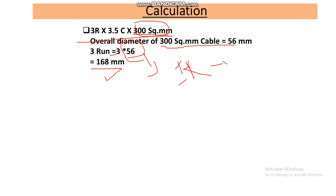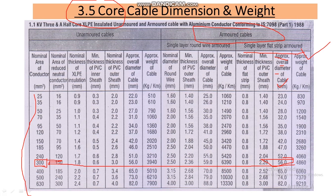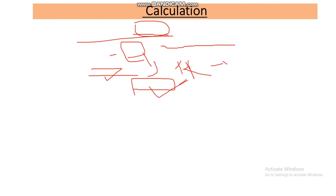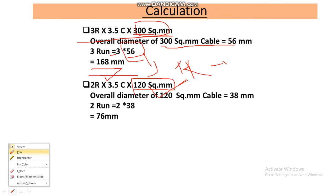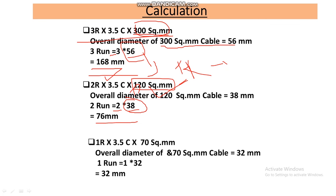Now for the two runs of 3.5-core 120mm² cable, let's go back to the cable catalog. Looking at the 120mm² entry, the diameter of this cable is 38mm. So for two runs, we multiply: 2 × 38mm = 76mm.